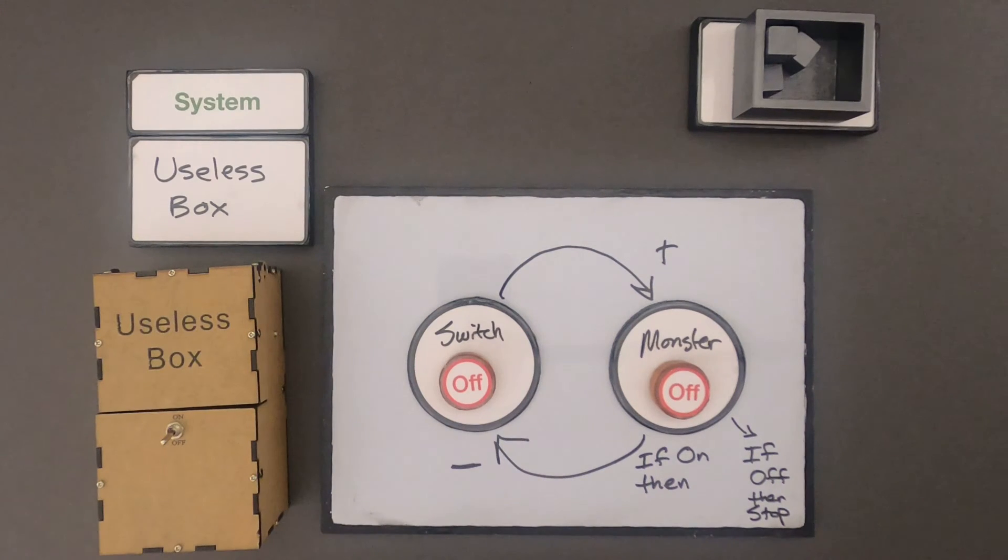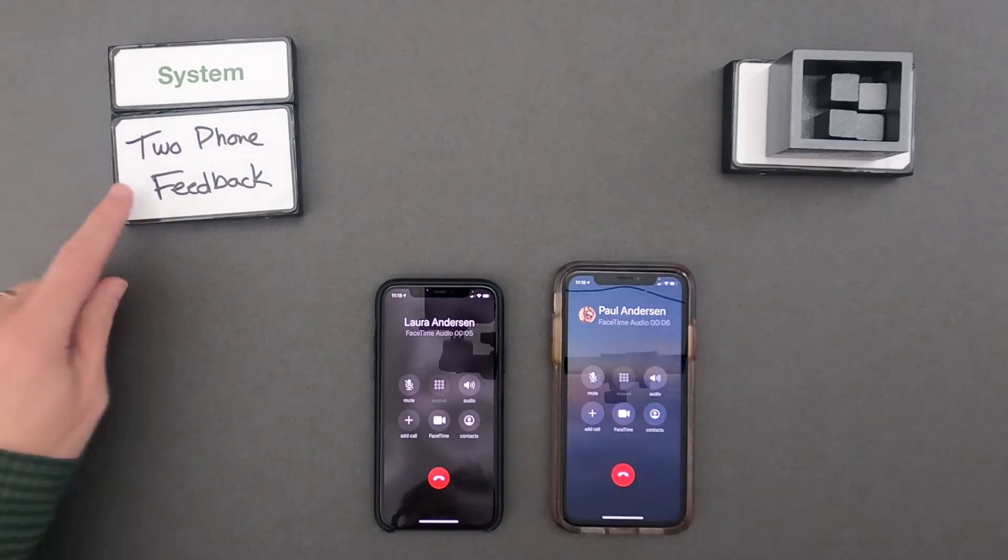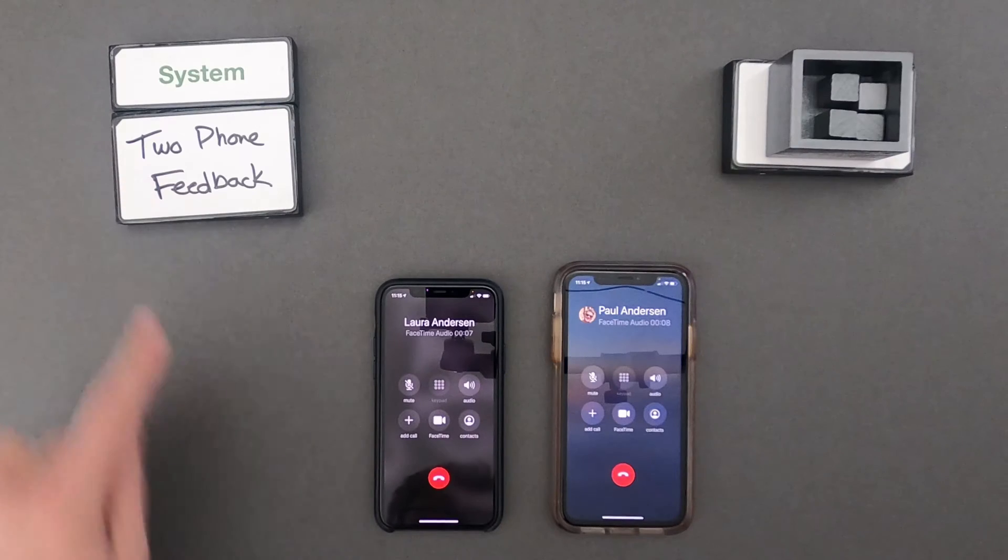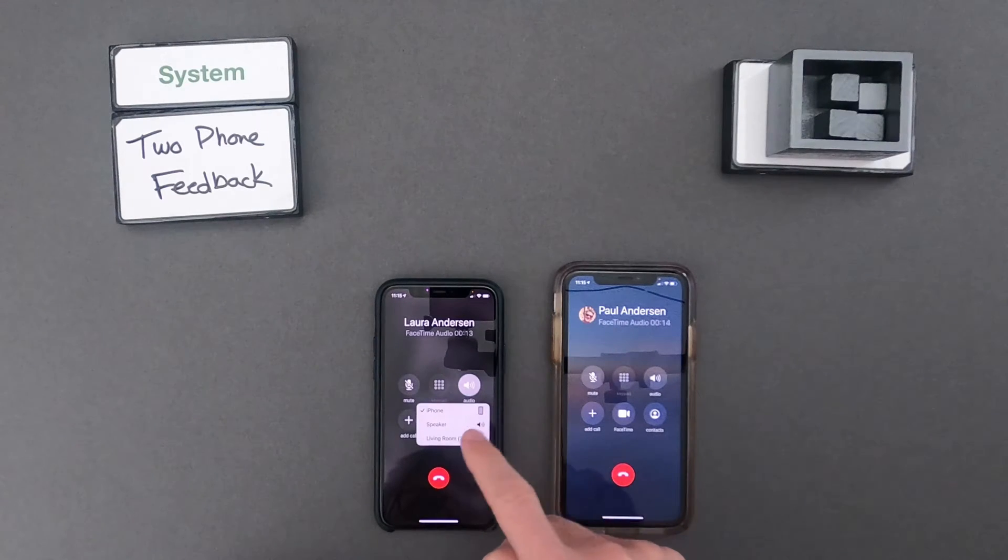So let me clean this off. And then let me give you a different system that I want you to try to simulate. Okay, for the second system, what we're going to look at is two phone feedback. And so this is my phone and my wife's phone. And they're on an audio call between each other. Let me turn the speaker on.